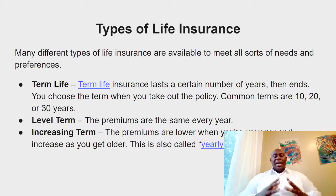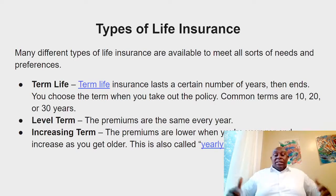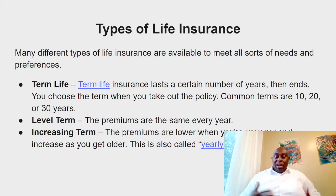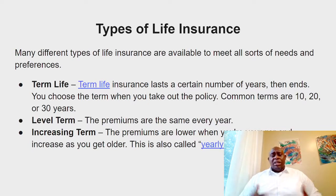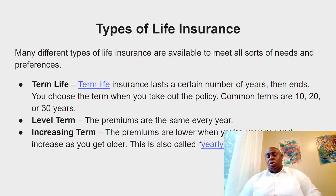Increasing term means the premium goes up every year — this is also called yearly renewable term. The premiums are lower when you are younger and increase as you get older. Unfortunately, we grow older every day, so the premium would have been fixed like a level term if age weren't a factor.